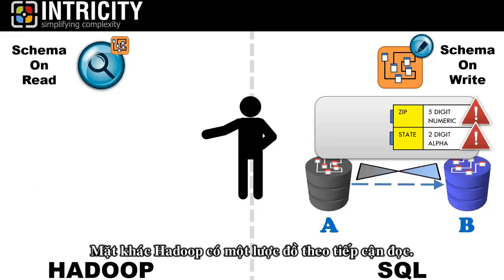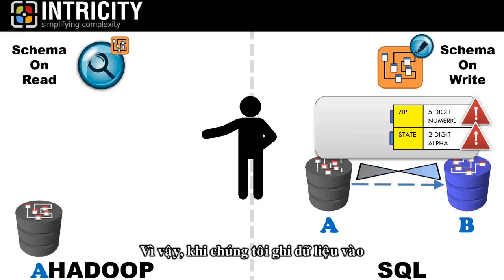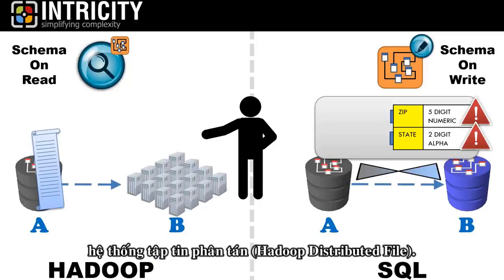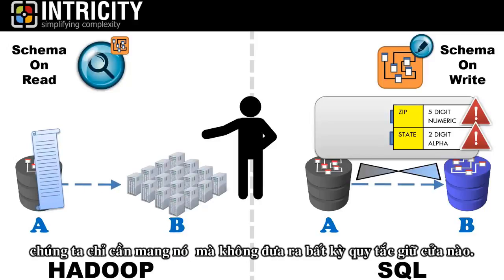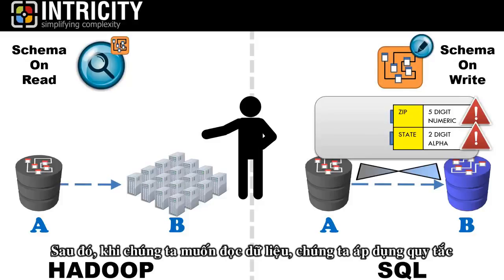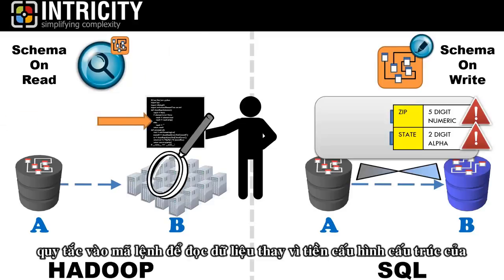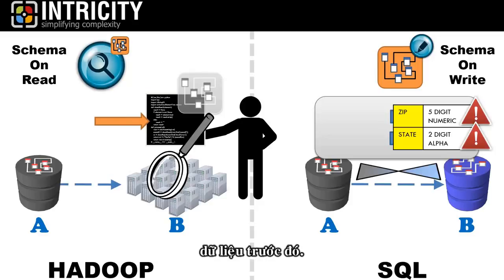Hadoop, on the other hand, has a schema on read approach. So when we write data into what's called the Hadoop distributed filing system, we just bring it in without dictating any gatekeeping rules. Then, when we want to read the data, we apply the rules to the code that reads the data, rather than pre-configuring the structure of the data ahead of time.